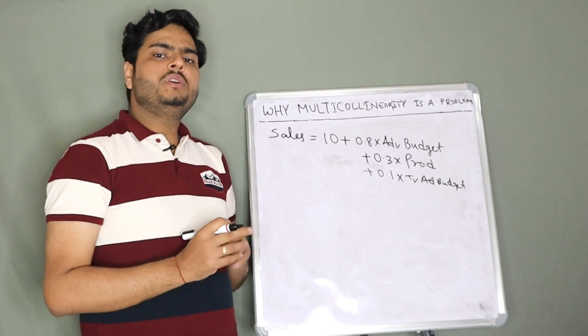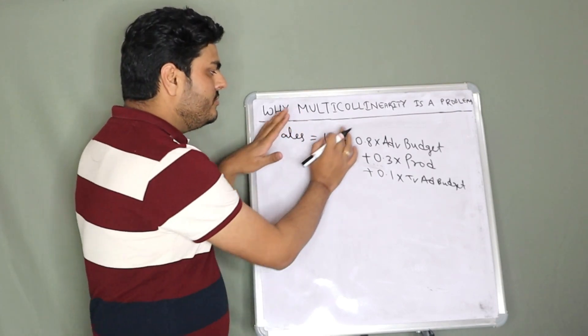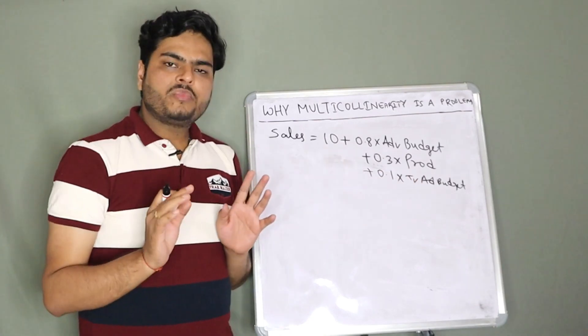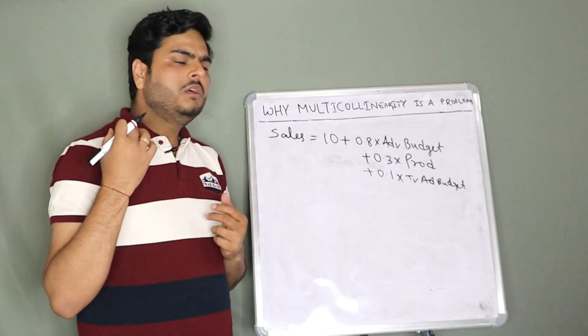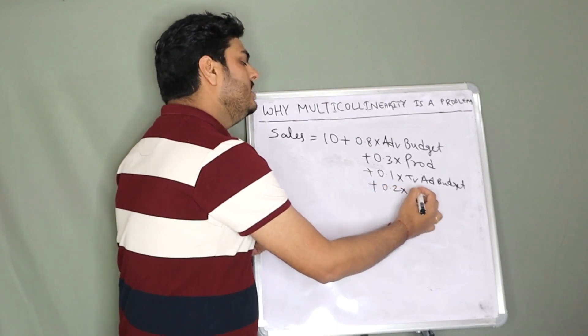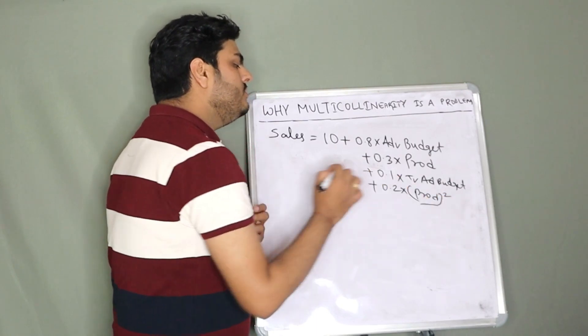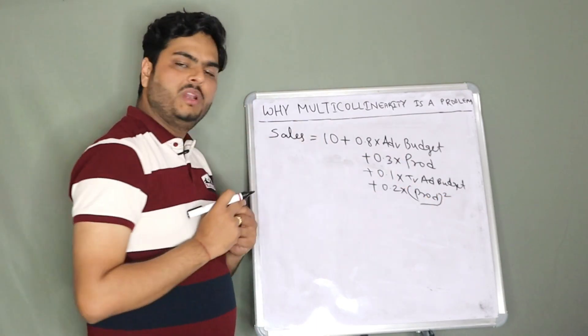Another kind of multicollinearity can be structure-related. For example, let's say I am doing some feature engineering on this data and I add another variable. I call that production square, a new variable prod square.